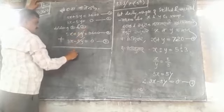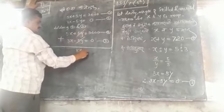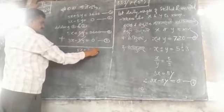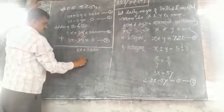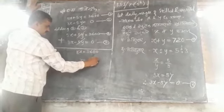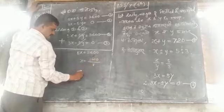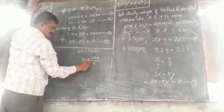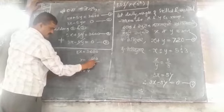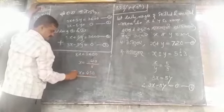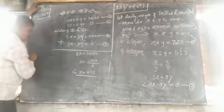8X is equal to 3600. X is equal to 3600 upon 8. X is equal to 450.